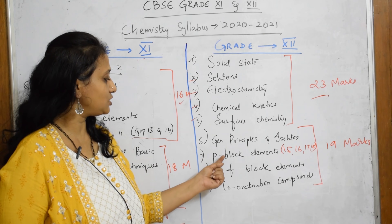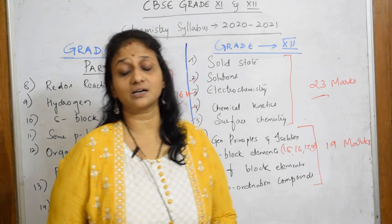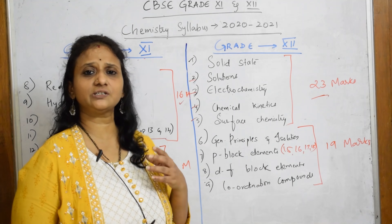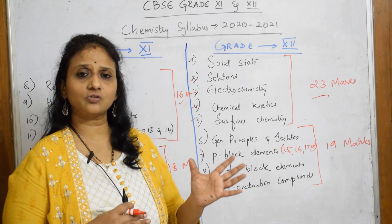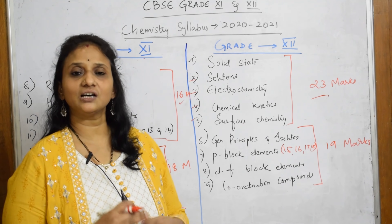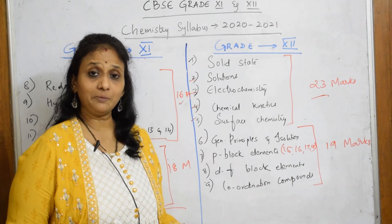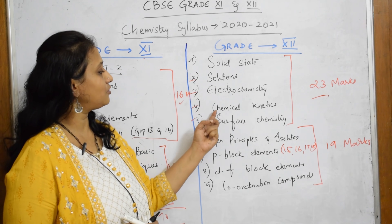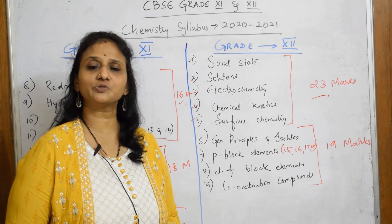Next comes D and F-Block Elements as well as Coordination Compounds. Starting from 'General Principles and Isolation' through these four chapters, the marks total 19. These 19 marks cover reasoning questions, inorganic equations, increasing and decreasing orders, and periodic trends. All the videos for these are done and kept in the playlist.